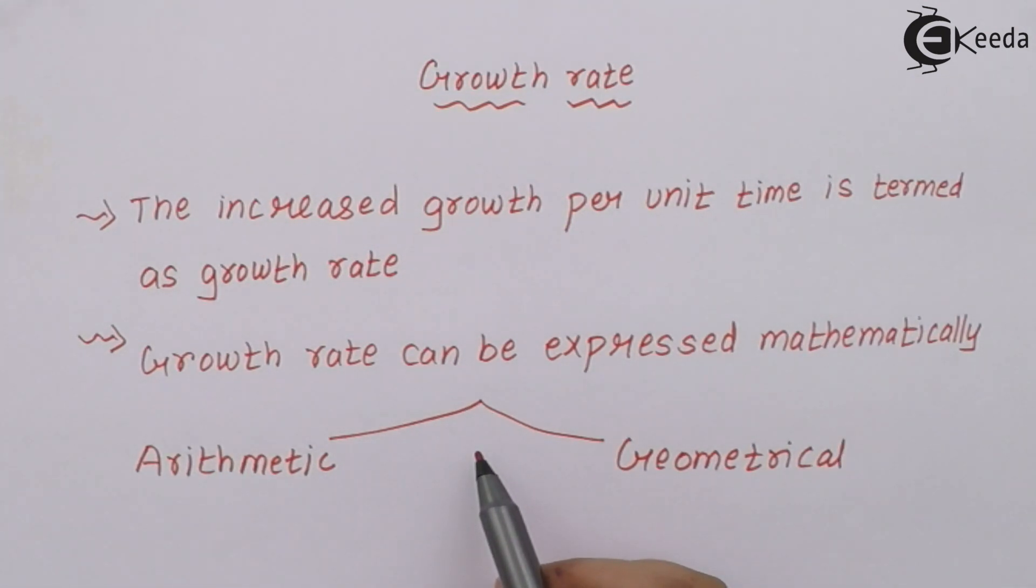Growth rate mathematically can be divided into two types: arithmetic progression and geometric progression.